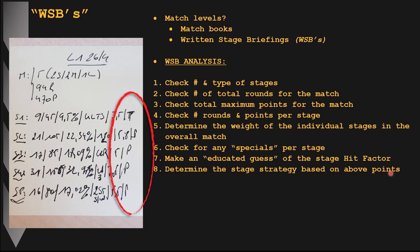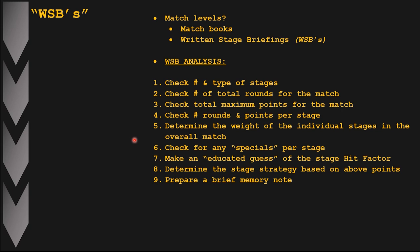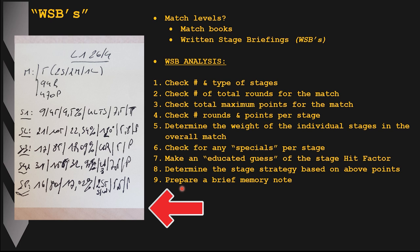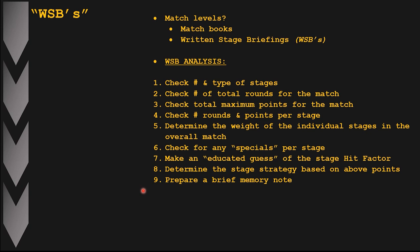In step nine of the 10-step process, once I've gathered all that information, I prepare a very small memory note — often just a small post-it — where I always write down the essential information in the same standardized fashion. This serves as a memory aid which I review just before my walkthrough, so I have the essential information on hand to build my stage plan. I don't memorize everything by heart; I just use the basic information on the post-it.